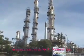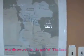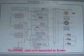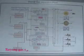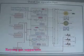Natural gas was discovered in the Gulf of Thailand in 1981 and was sent to Rayong Province as feedstock and raw material to the Khanom and Rayong Gas Separation Plants to isolate various compositions.